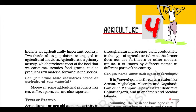Food crops other than grains. Sugarcane is a tropical as well as subtropical crop. It grows well in hot and humid climate with a temperature of 21 to 27 degrees centigrade and an annual rainfall between 75 centimeters and 100 centimeters. Irrigation is required in regions of low rainfall. It can be grown on a variety of soils and needs manual labor from sowing to harvesting. India is the second largest producer of sugarcane only after Brazil. It is the main source of sugar, gur (jaggery), khandsari, and molasses. The major sugarcane-producing states are Uttar Pradesh, Maharashtra, Karnataka, Tamil Nadu, Andhra Pradesh, Telangana, Bihar, Punjab, and Haryana.